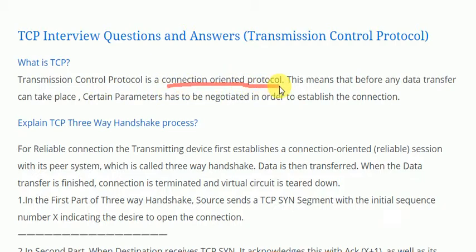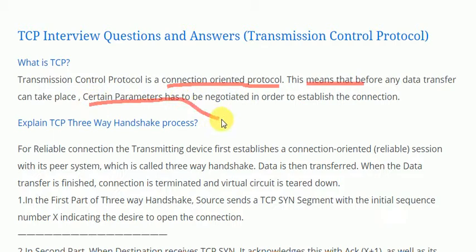TCP is a reliable, connection-oriented protocol. This means that before any data transfer can take place, certain parameters have to be negotiated in order to establish a connection. We call this a TCP connection.